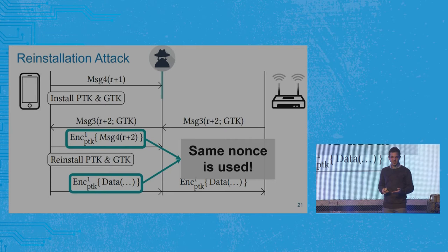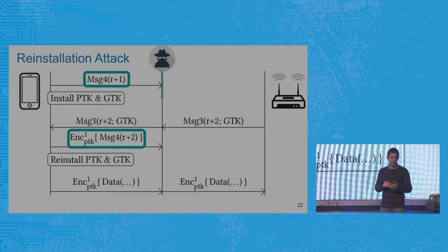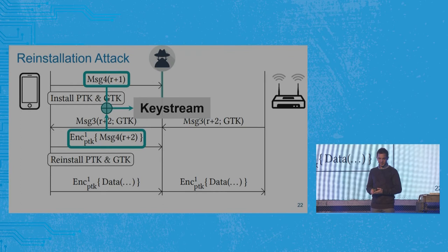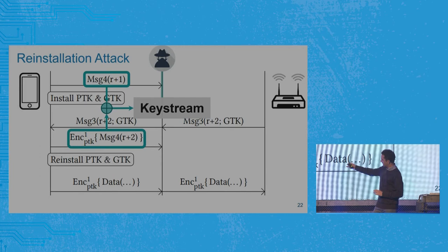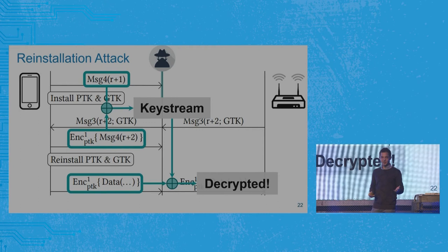Both messages are sent using a nonce value of one, meaning key stream is being reused — this is bad because now we can break the encryption protocol. One technique to decrypt frames is to observe that we already saw message four in plain text and also in an encrypted form. These two messages are almost identical, so if we XOR the plaintext with the ciphertext, we recover the key stream corresponding to nonce value one. The data frame we want to decrypt also uses nonce value one, meaning it uses exactly the same key stream. We XOR them together and we have decrypted a data packet sent under a WPA2 network. We have broken WPA2.